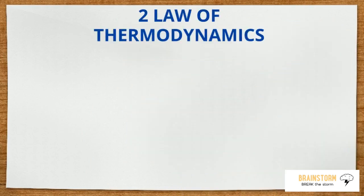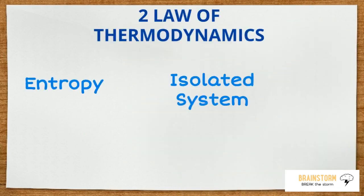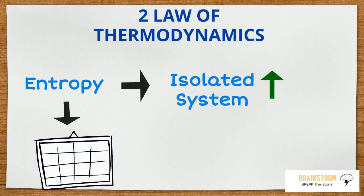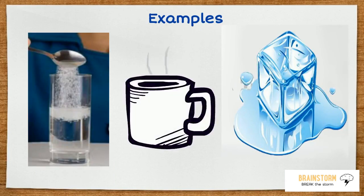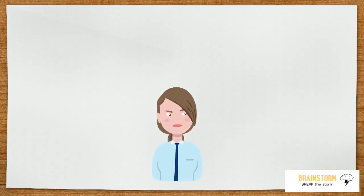According to the second law of thermodynamics, the entropy of any isolated system always increases. Entropy is a measure of uncertainty or randomness or disorderliness. Examples of entropy are ice melting, sugar dissolving, boiling water for tea, etc. So how is this related to time?